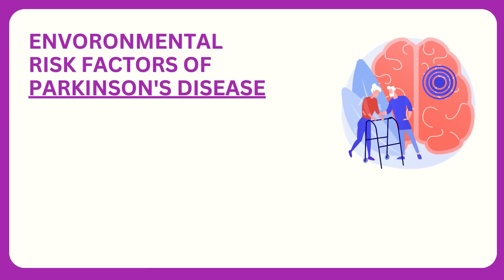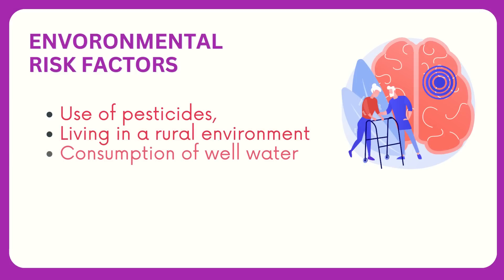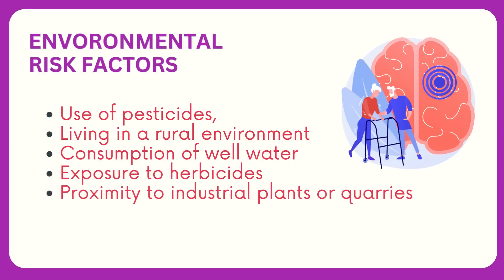Environmental risk factors commonly associated with the development of Parkinson's disease include use of pesticides, living in a rural environment, consumption of well water, exposure to herbicides, and proximity to industrial plants or quarries.